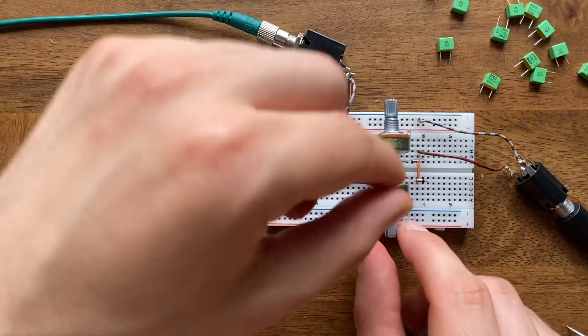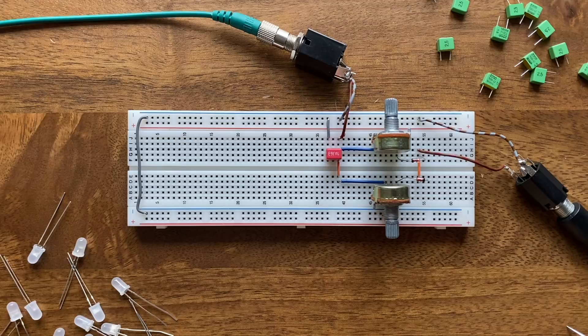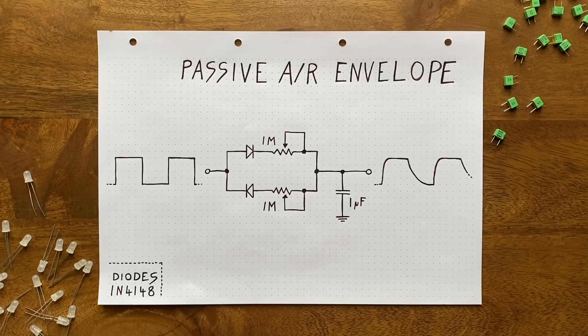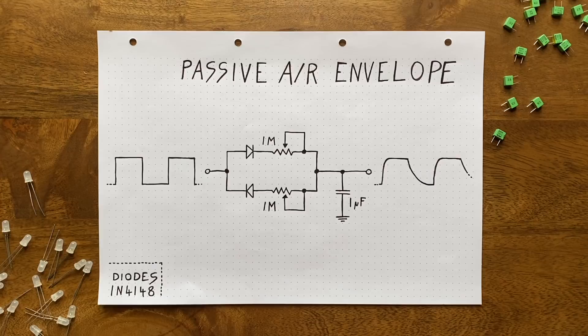As you can hear, I am now able to sculpt the filter movement much more freely. Great. So what we have here is an ultra-simple passive attack release envelope generator. Why passive? Because it does not include any form of amplification. It's getting all of its power from the square wave oscillator. Is this a problem?